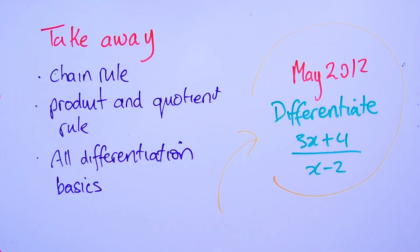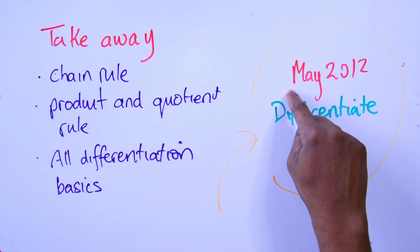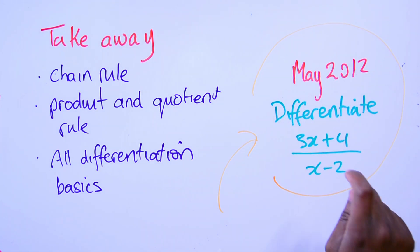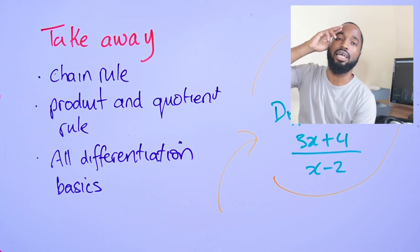Here's a question to try: since we didn't do any quotient rule, try this one. See if you can do it, leave the answer in the comments below. This is from way back in May 2012. It's just simple quotient rule, no chain rule involved here. Till next time.